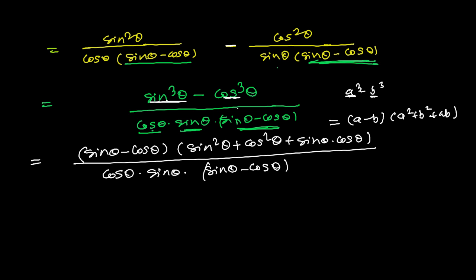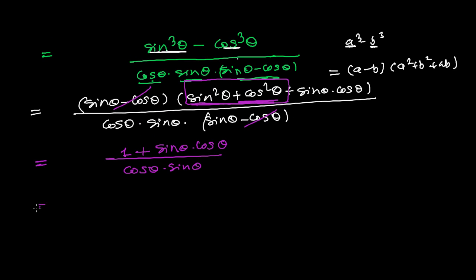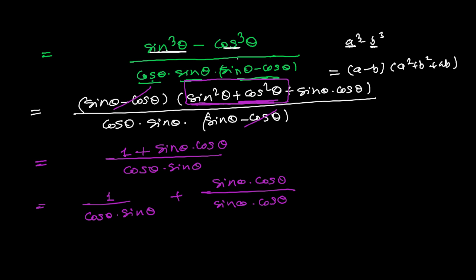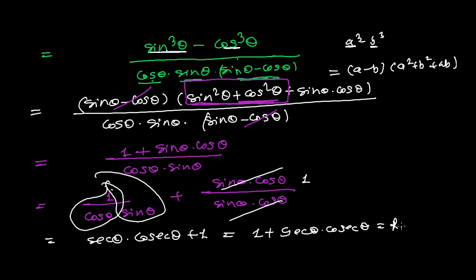Now (sine theta minus cos theta) cancels. We are left with sine squared theta plus cos squared theta plus sine theta cos theta, all over cos theta times sine theta. Since sine squared theta plus cos squared theta equals 1, this becomes 1 plus sine theta cos theta, all divided by cos theta times sine theta. Splitting: 1 over cos theta times sine theta gives sec theta times cosec theta, and sine theta cos theta over sine theta cos theta gives 1. So we get 1 plus sec theta times cosec theta, which is our right-hand side.